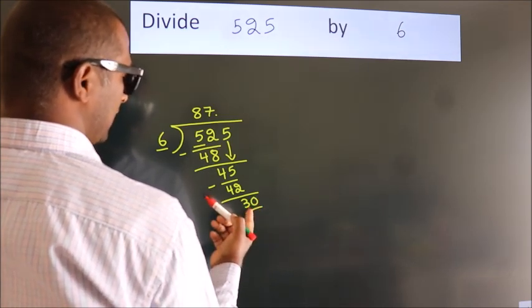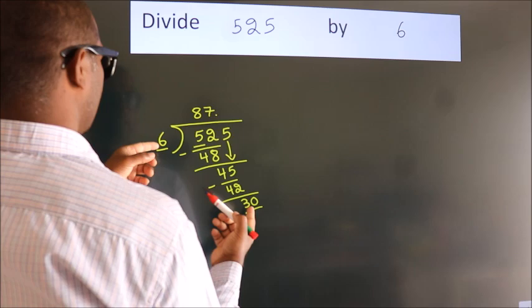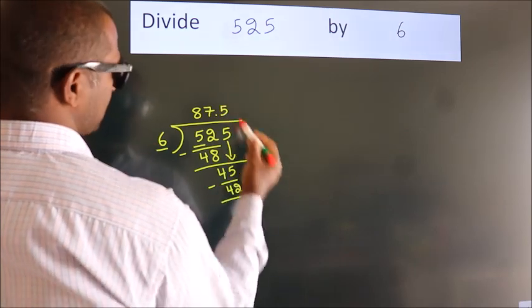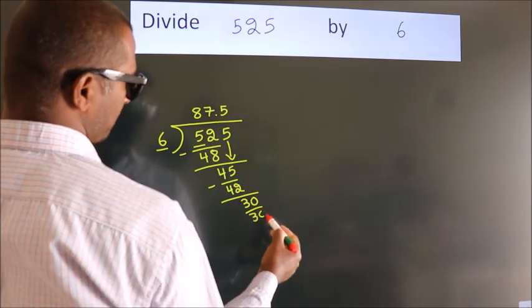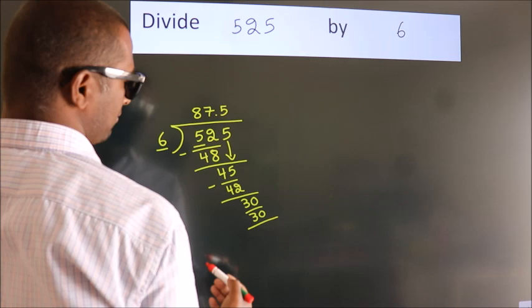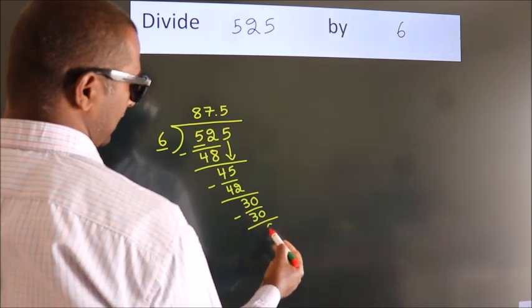When do we get 30 in the 6 table? 6 times 5 is 30. Now, we subtract and get 0.